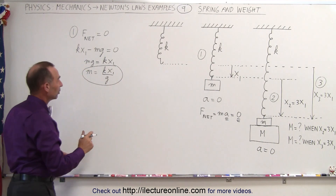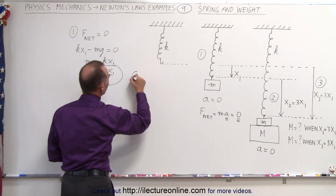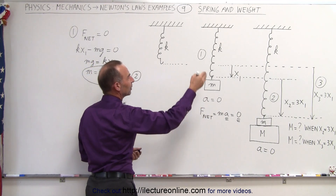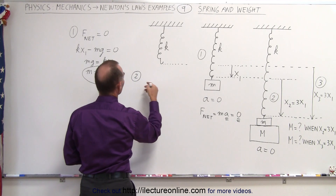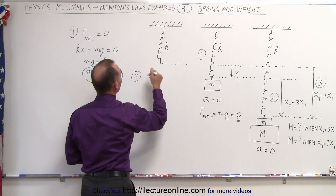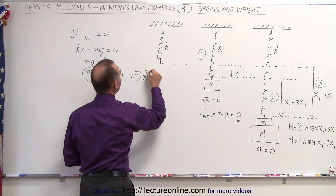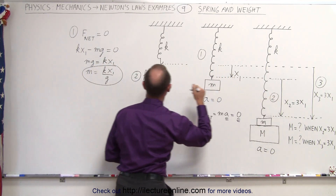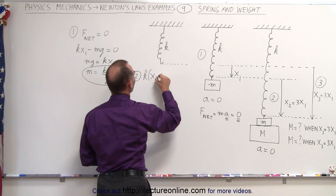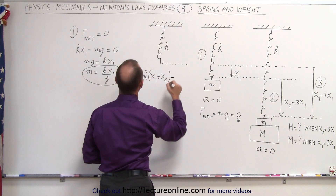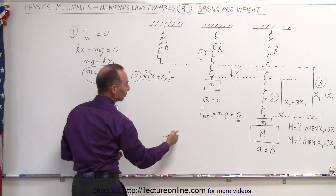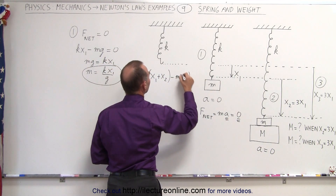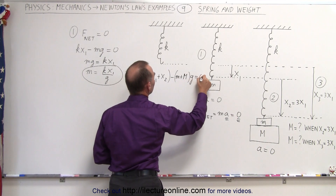Now we'll go to situation number two. We now have the additional mass and the additional elongation. So the force pulling up will be k times the total distance x1 plus x2, and minus the force pulling down, which is the sum of the two masses, m plus big M times g, and that has to equal zero.